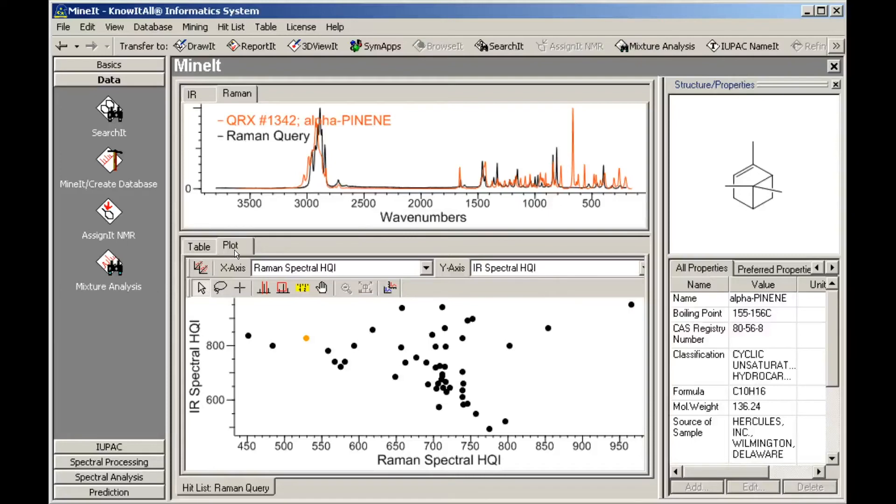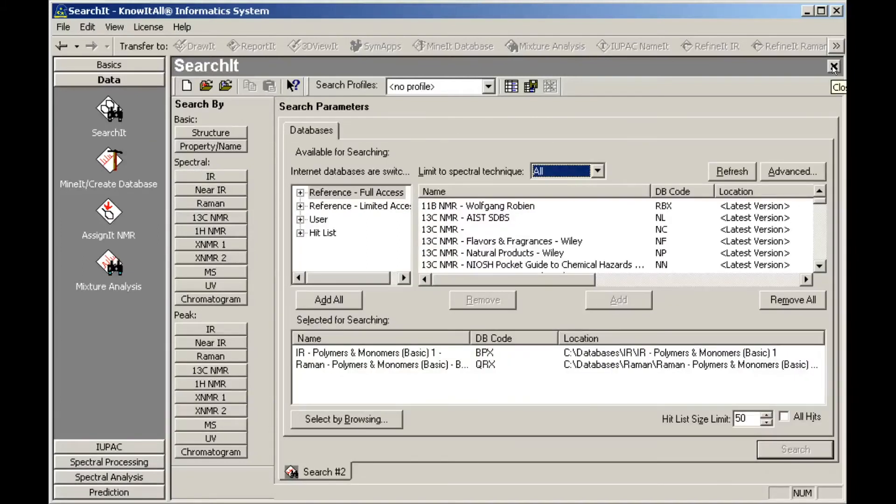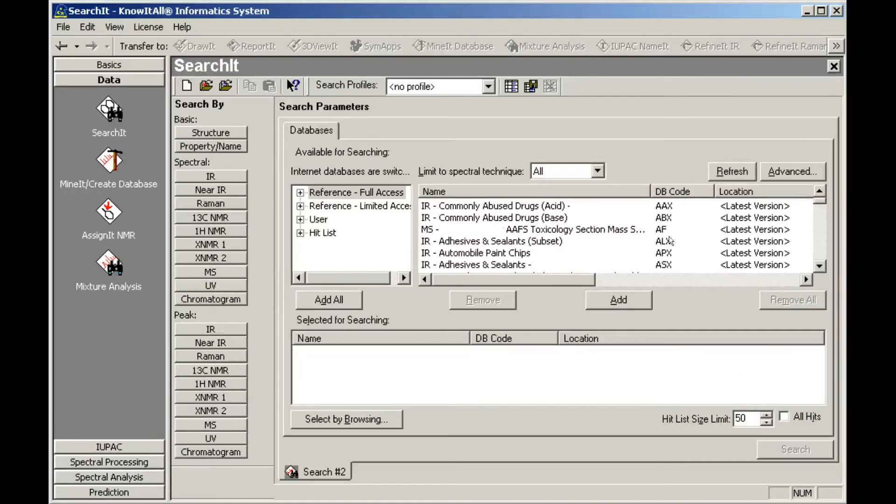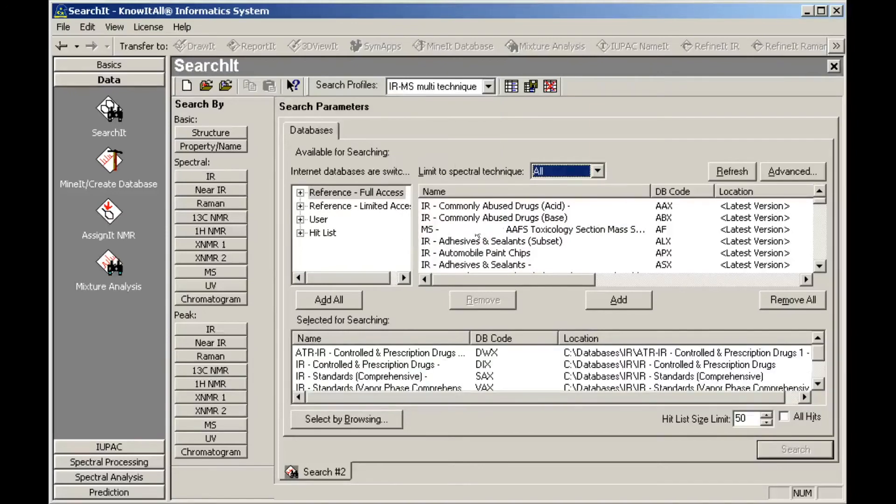We will perform a second multi-technique search. Return to the Search-It application and close the previous search. We will use a search profile to select a different group of databases for searching.